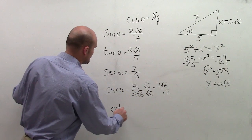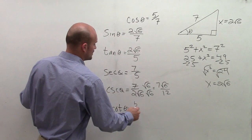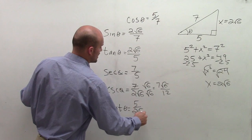And then last but not least, I have cotangent of theta, which is the reciprocal of 2 square root of 6 over 5, which will be 5 over 2 radical 6.